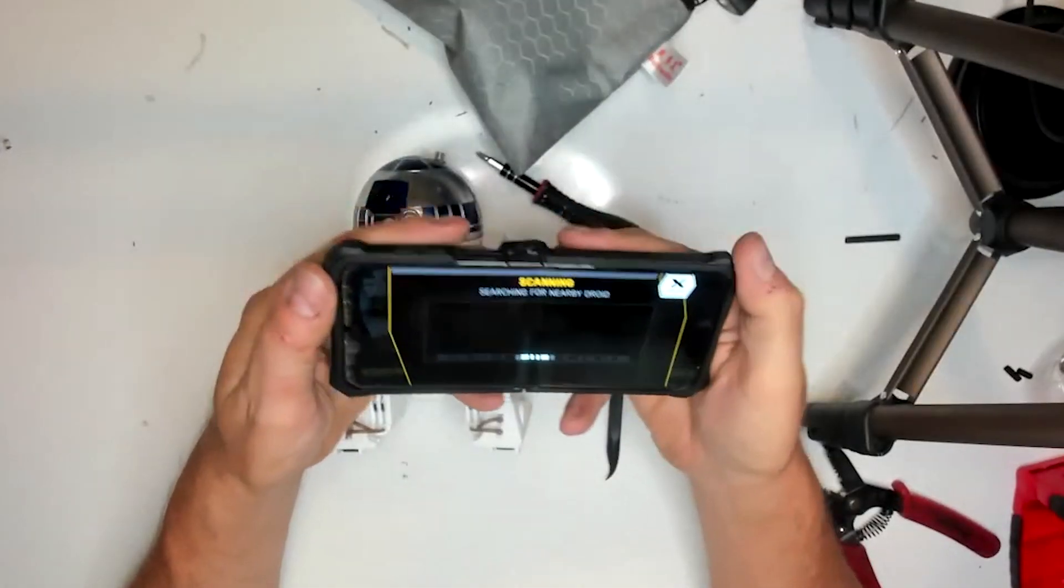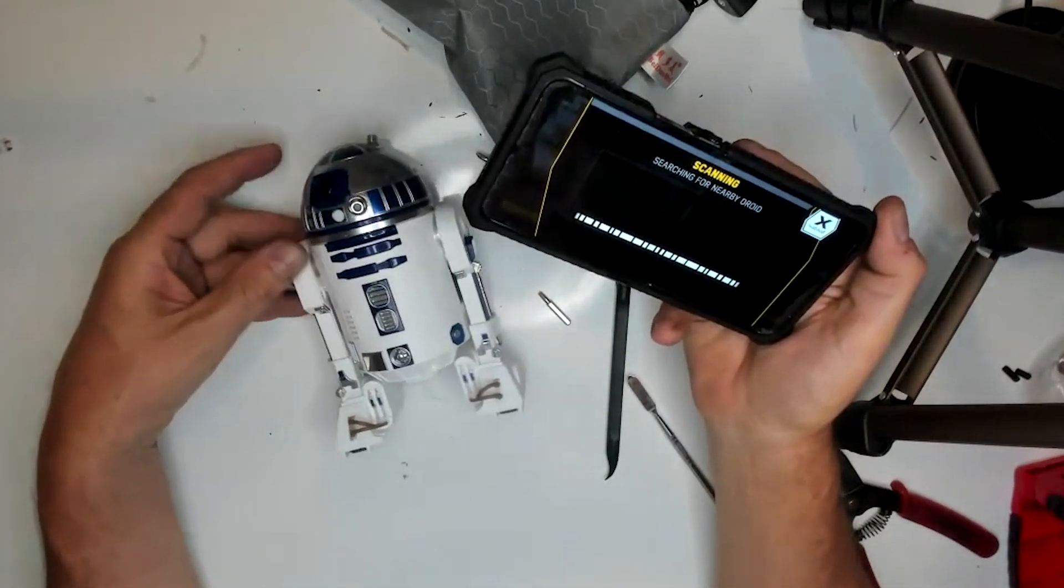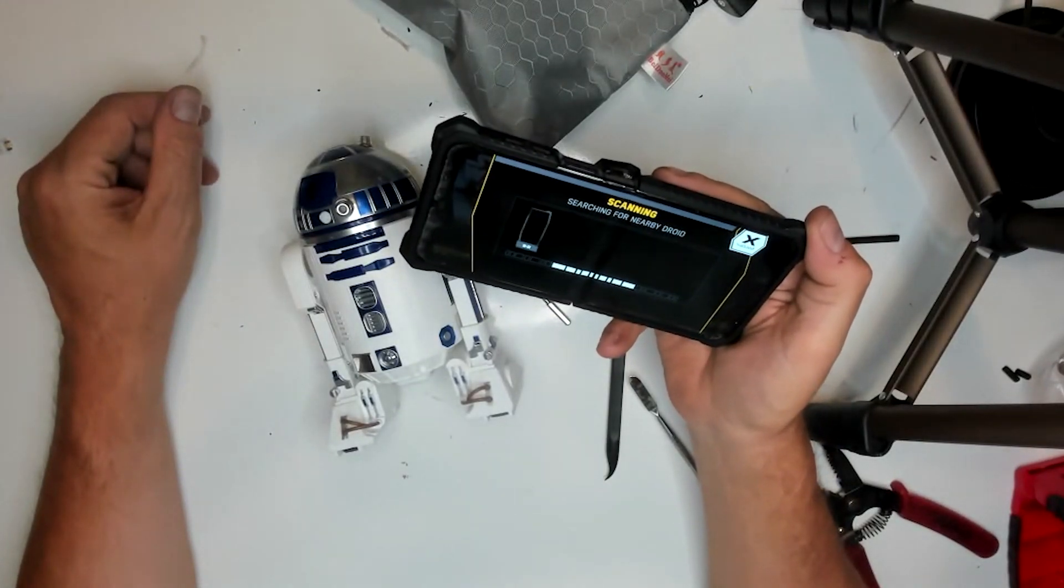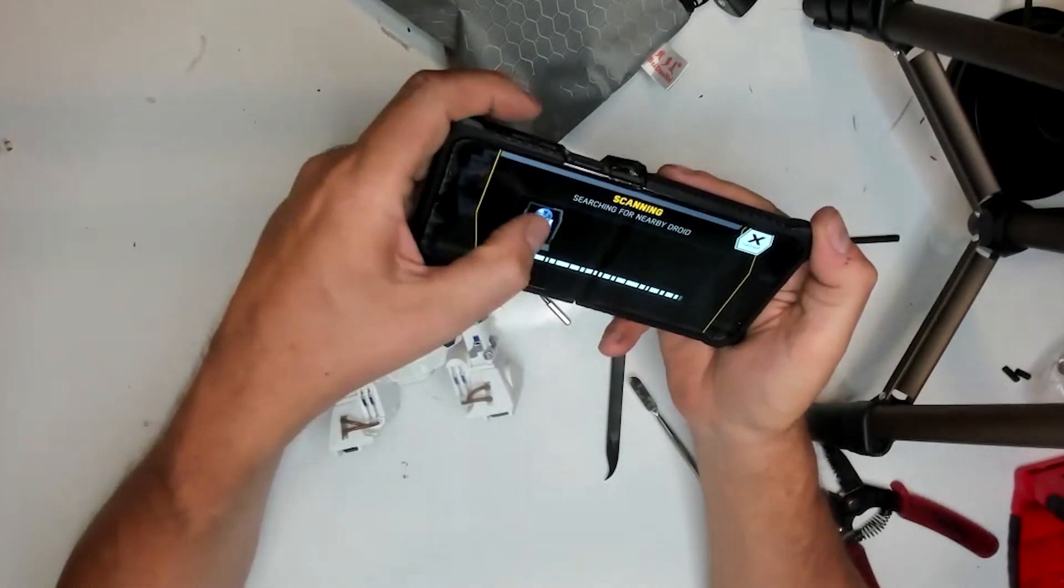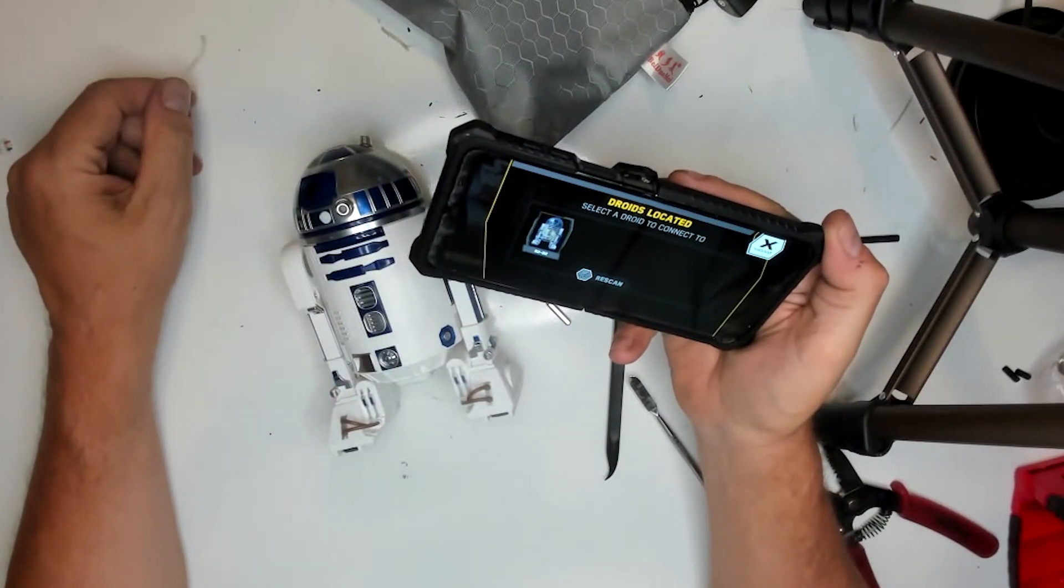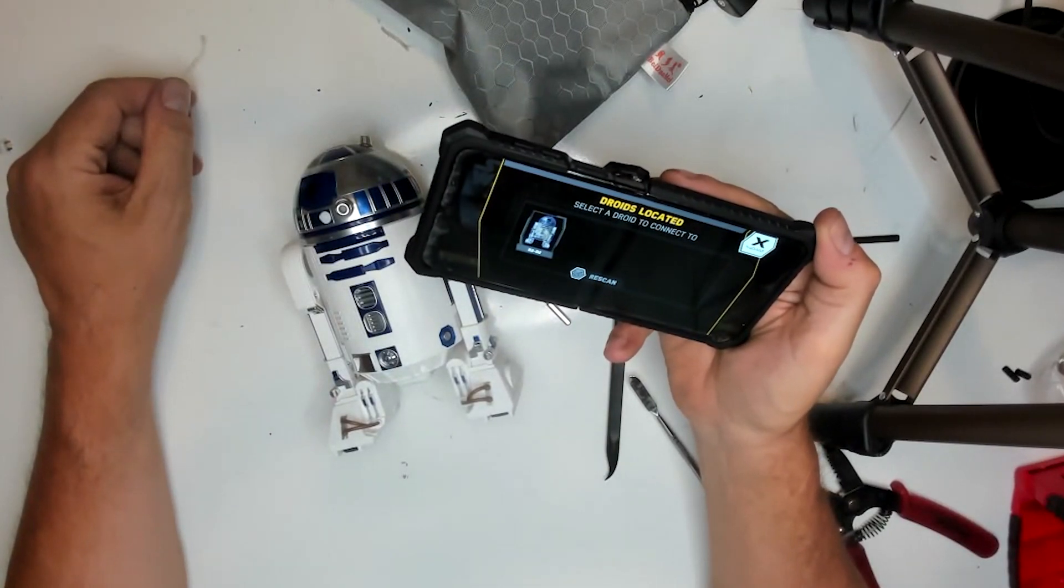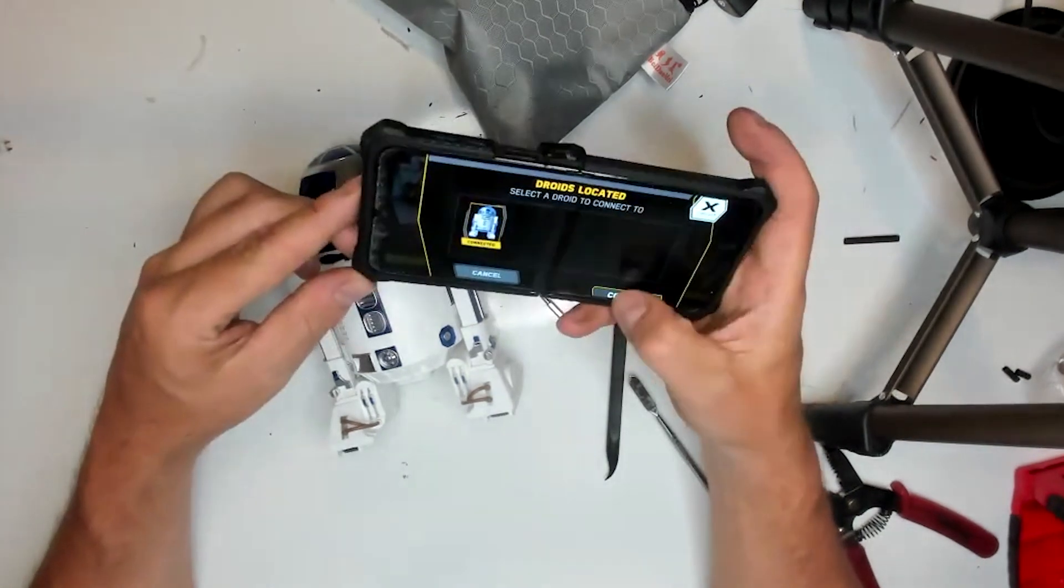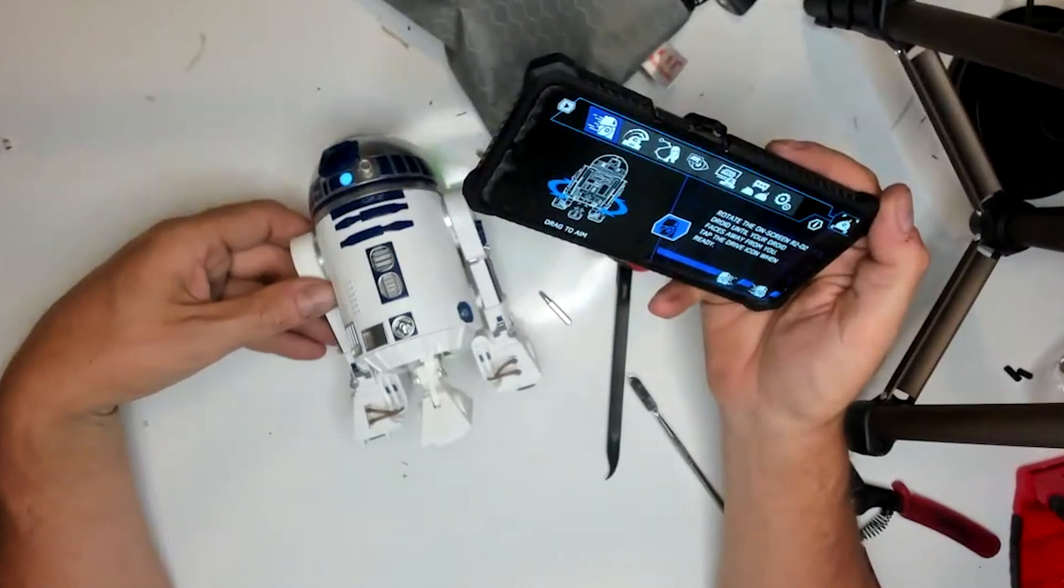R2 is back together, and now it's time for the good old app test. The app located him. That's a good sign. Hit confirm, and we are able to connect, and time for some drive tests.